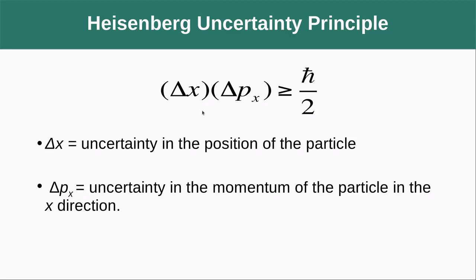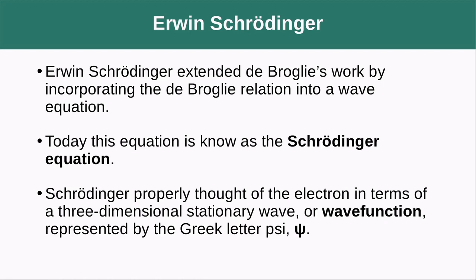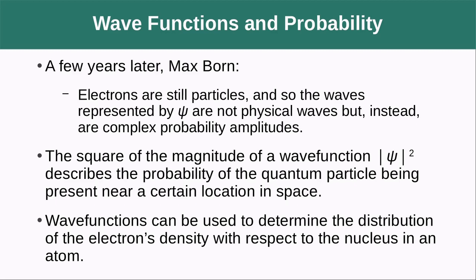The question becomes: how do we handle this? We need to handle it statistically. Erwin Schrödinger extended de Broglie's work by incorporating the de Broglie relationship into a wave equation, now known as Schrödinger's equation. Schrödinger thought of the electron as a three-dimensional stationary wave or wave function, represented by the Greek letter ψ (psi). Wave functions contain all information about mechanical systems, but we can only fully understand them for simple cases like single particles or small particle systems.